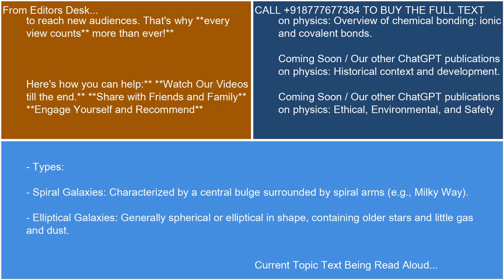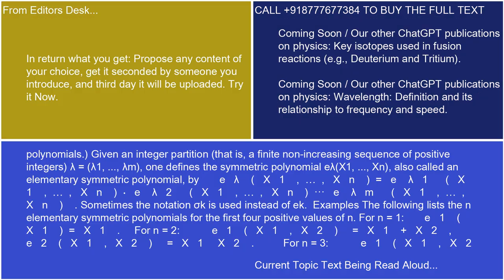Types: Spiral galaxies are characterized by a central bulge surrounded by spiral arms, e.g., the Milky Way. Elliptical galaxies are generally spherical or elliptical in shape, containing older stars and little gas and dust. Irregular galaxies lack a distinct regular shape, and are often smaller and less organized than spiral or elliptical galaxies.